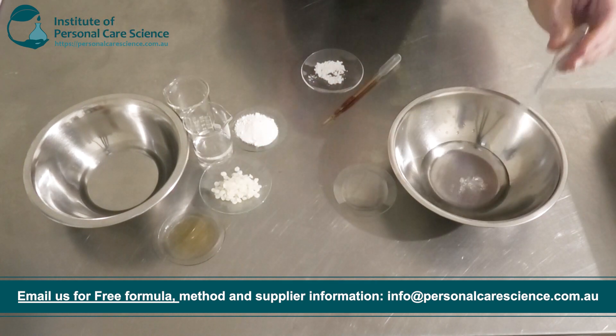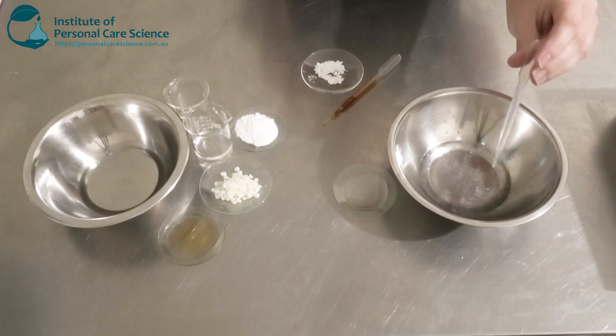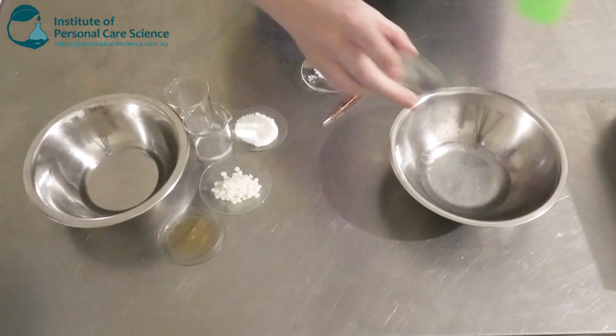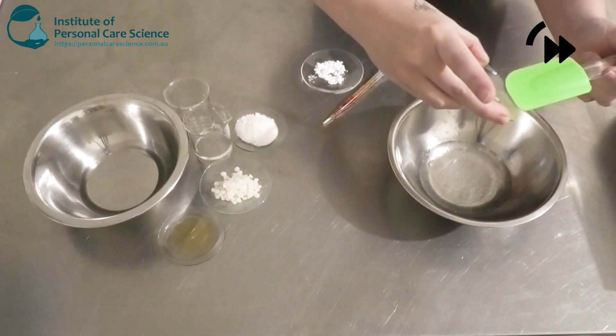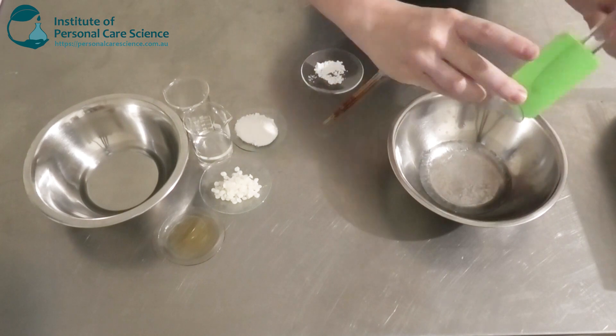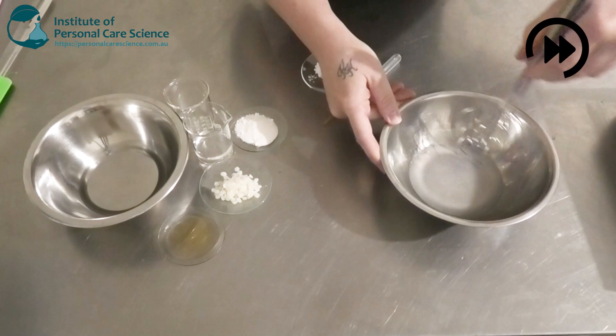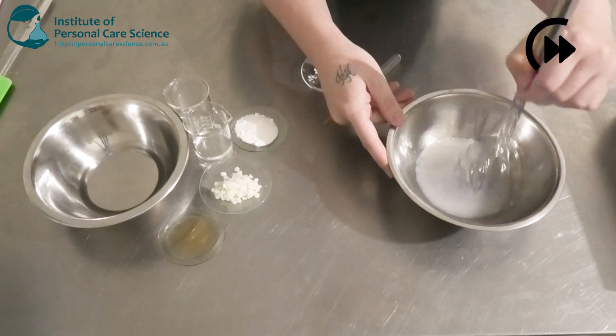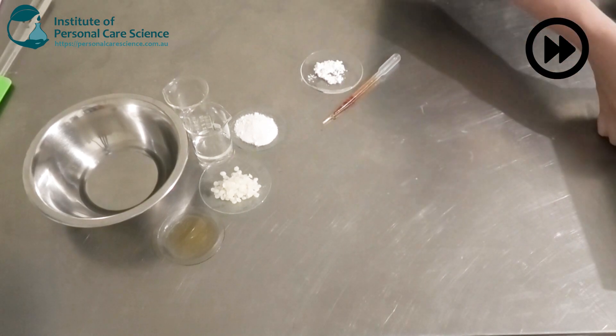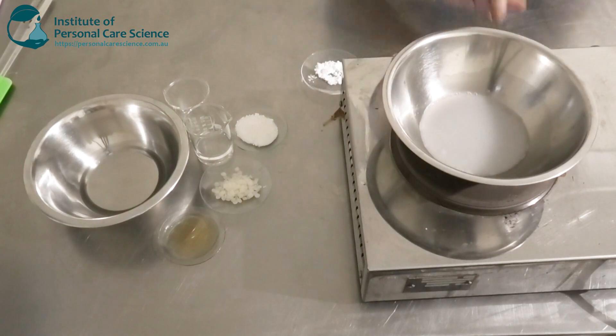Okay, so we're going to combine our water phase all together. I've got my preservative here, I've chosen Spectrastrate G2 natural, and here I have some glycerin. This is going to help create a nice protective barrier on the skin, it's going to be nice and moisturizing. I'm just going to pop that on here.